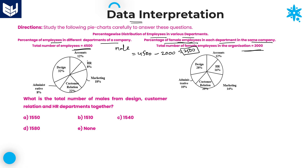We have several departments: accounts, HR, marketing, customer relation, administrative, and design — these are the six different departments provided in this question. This is the complete information. Now we need to solve the questions according to the given information.